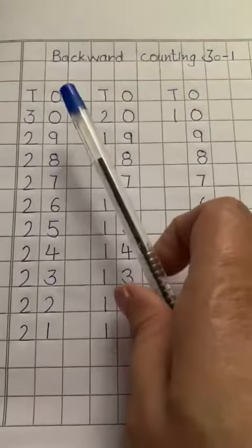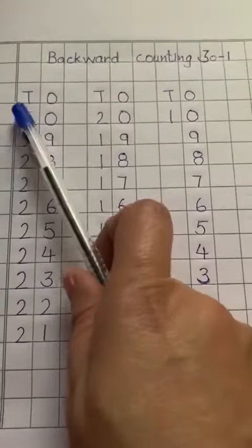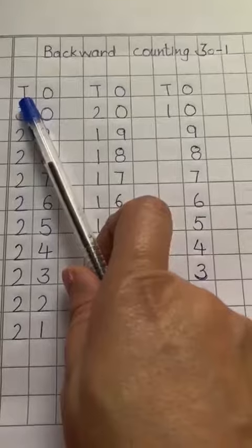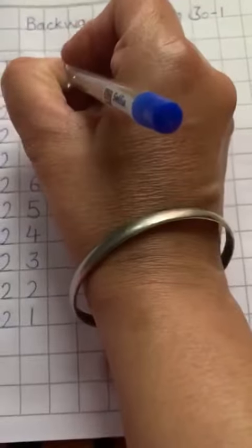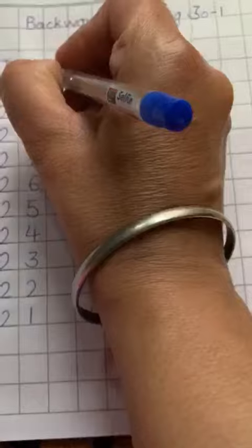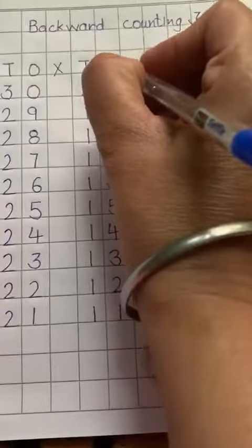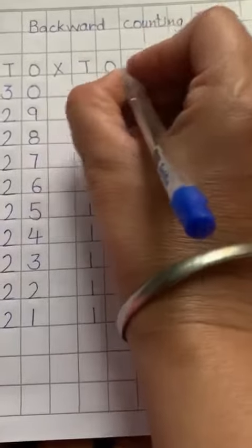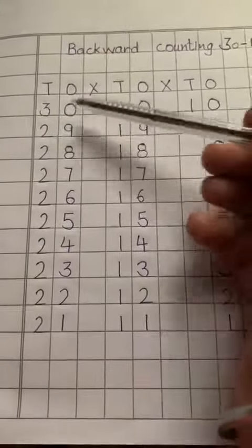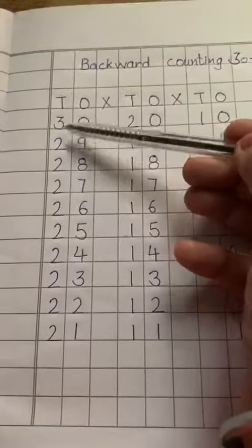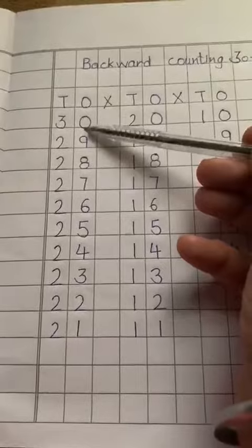Tens — T stands for tens — and ones. Tens, ones, tens, ones. Okay, so start writing: 30.